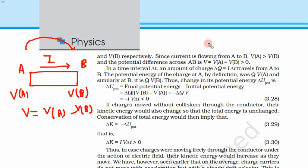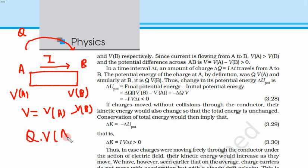Before this time interval, there was some charge q at point A. The potential energy of this charge at A was q·Va. Similarly, if the charge q were at point B, its potential energy would be q·Vb.